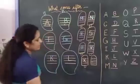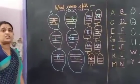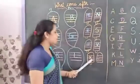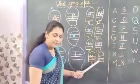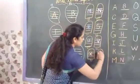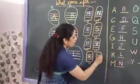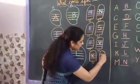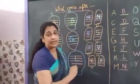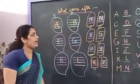And next which letter is this? X. X for x-ray. After X for x-ray comes Y. How to make Y? One slanting line and one more big slanting line — which makes Y. Y for yak.